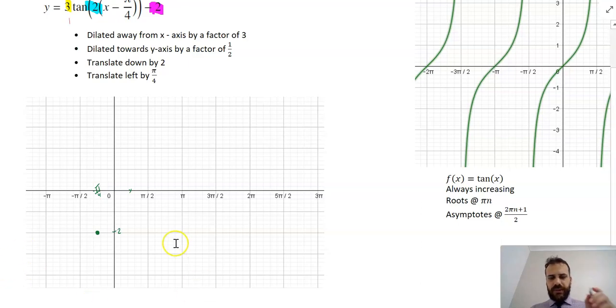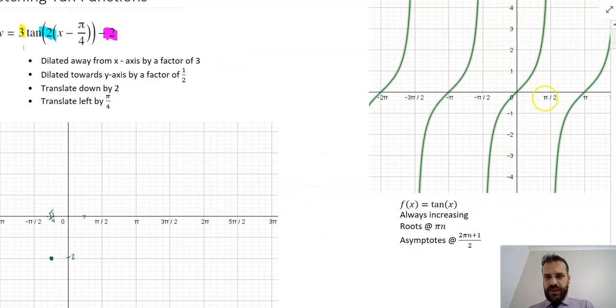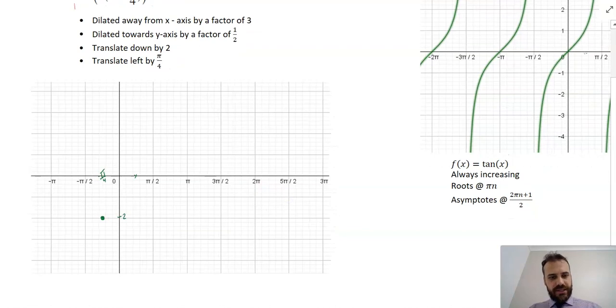What do I know about my asymptotes? Originally asymptotes appear at π/2, but we said that this function has been squashed by a factor of a half, which means that the original asymptote would have started at π/4, but then we shifted it left by π/4. So I'm actually going to have my first asymptote at this y-axis.